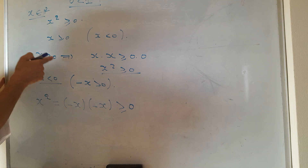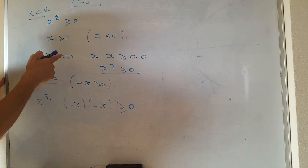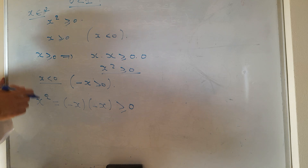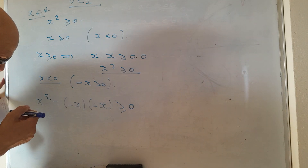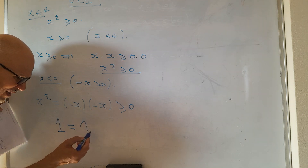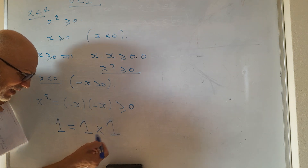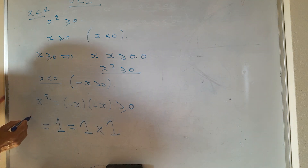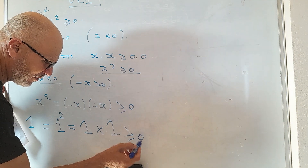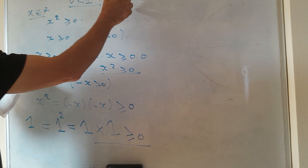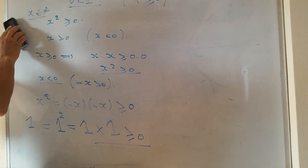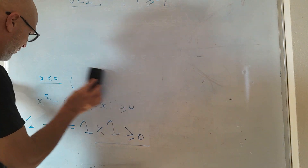In both cases — whether x ≥ 0 or x < 0 — we have x² ≥ 0. Now we remark that 1 = 1 · 1 = 1², and since all squares are greater than or equal to zero, we have proven that 1 ≥ 0. Next, we try to prove that 1 cannot equal zero.